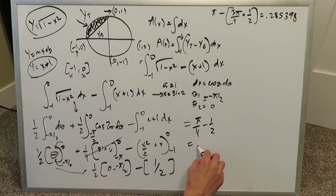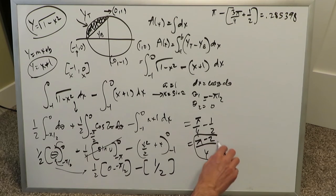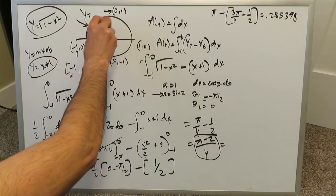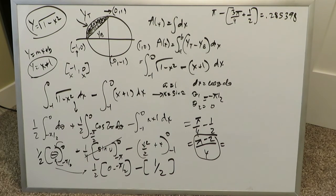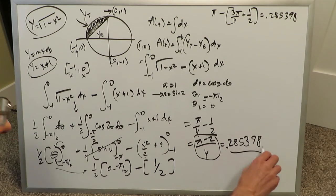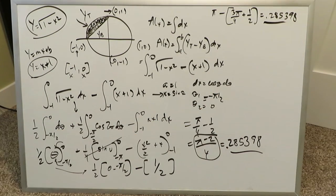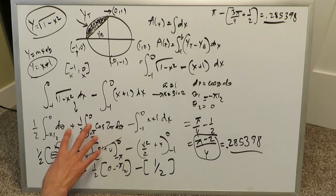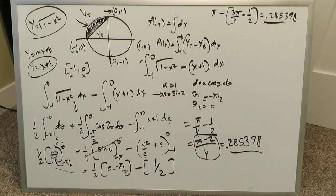This gives us pi over 4 minus one half, which can be written as pi minus 2 over 4. That's the fractional answer for this area. Numerically, pi minus 2 divided by 4 equals 0.285398 — exactly matching the geometric result we calculated earlier. That confirms our integral calculus answer is correct.